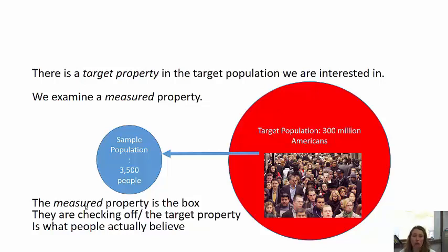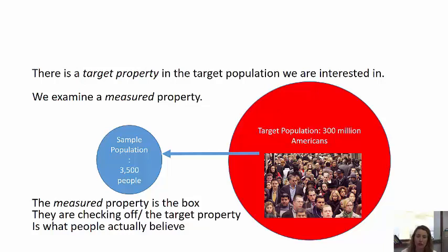The measured property is how we figure out the actual thing we're trying to get at, which is obeseness. A measured property could be grabbing people off the street of New York and weighing them. It could be giving people a dunk test to measure body fat — that's when you submerge someone in a tank of water. Or you could just do a phone survey and ask people over the phone if they're overweight, or have people check off a box. The measured property is the way that you measure what you're actually getting at.